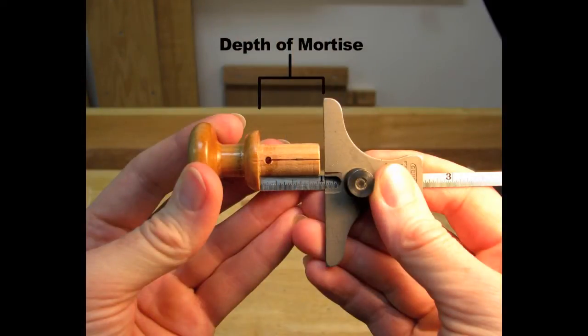Check the length of your tenon with a gauge that's set to the depth of your mortise. The tenon should be a little shorter so it doesn't bottom out.